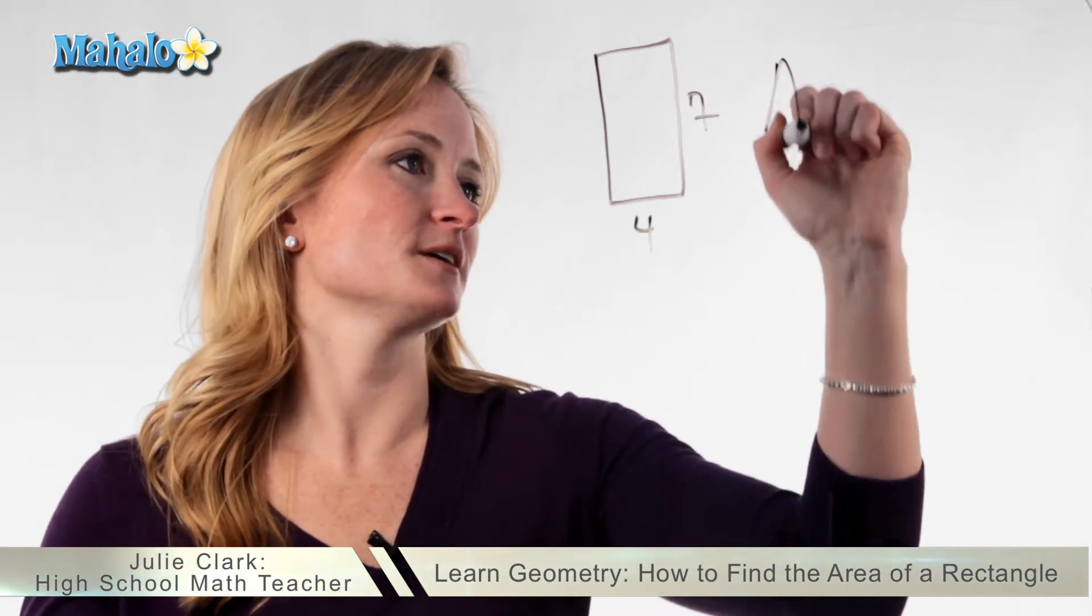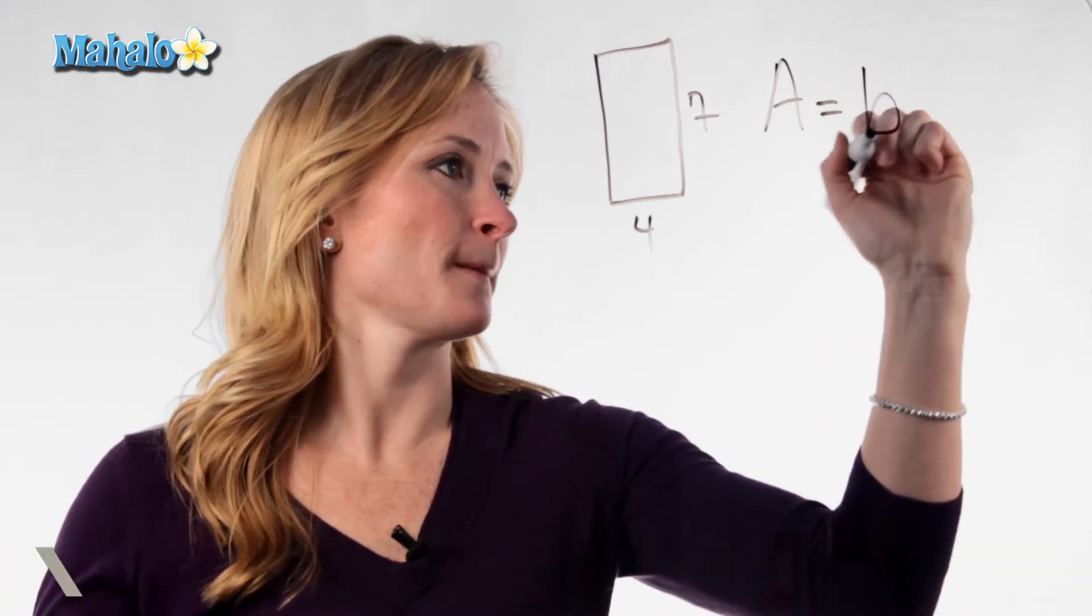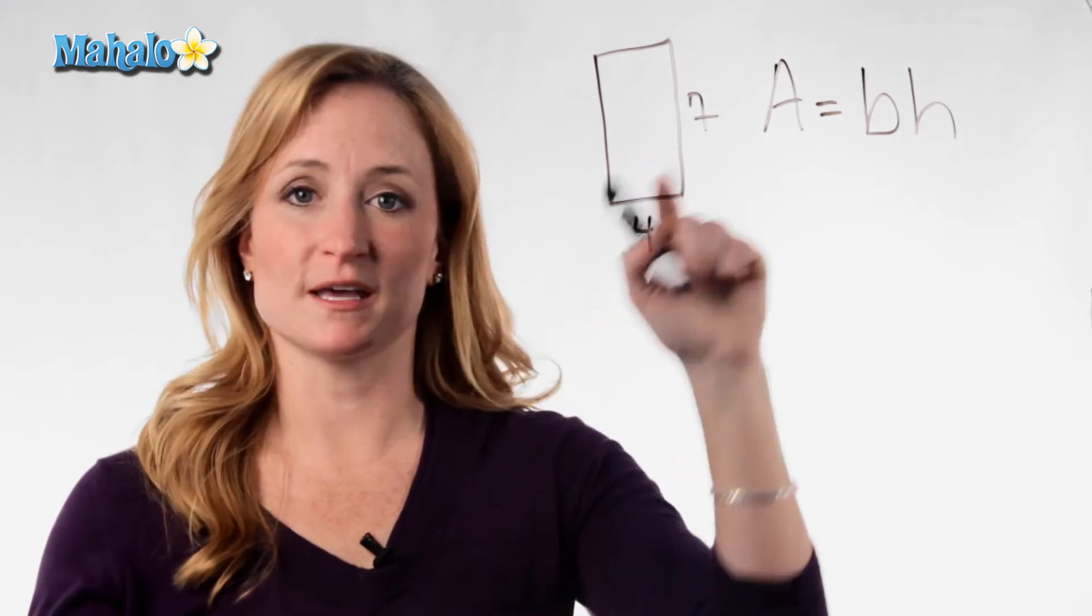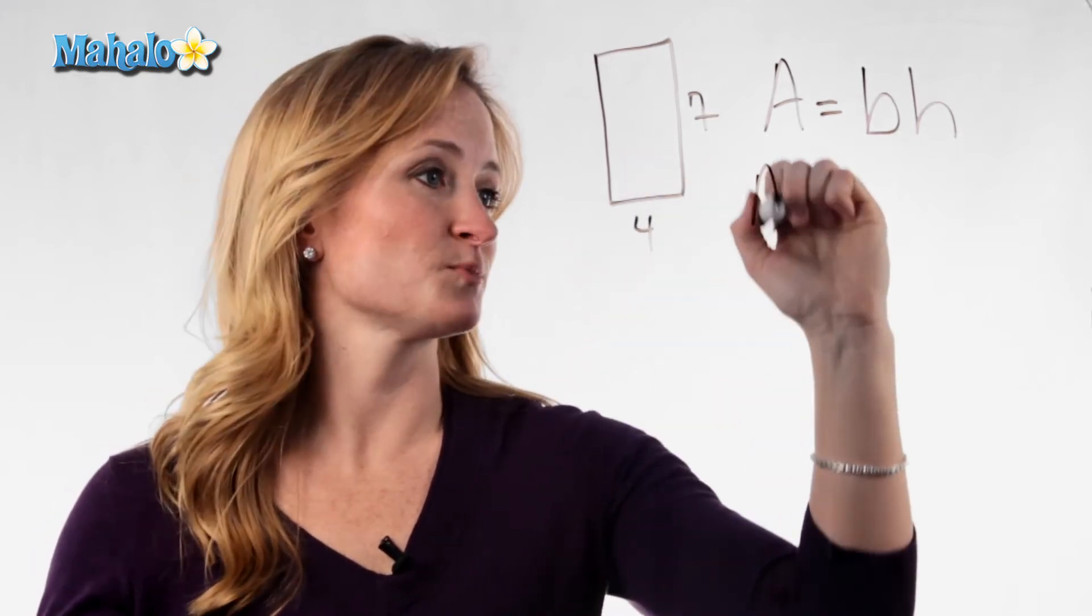Now the formula for area of a rectangle is A equals base times height. In this case we have a base of 4 and a height of 7. So go ahead and just plug your numbers in.